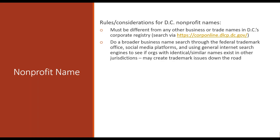Aside from searching the DC corporate registry, it's also imperative to do a broader name search — specifically through the federal trademark office — to see if anyone has trademarked the name you're trying to use. You also want to check social media platforms and do general Google searches to see what other entities might be using an identical or similar name, as they may already have some trademark protections even without a registered trademark.